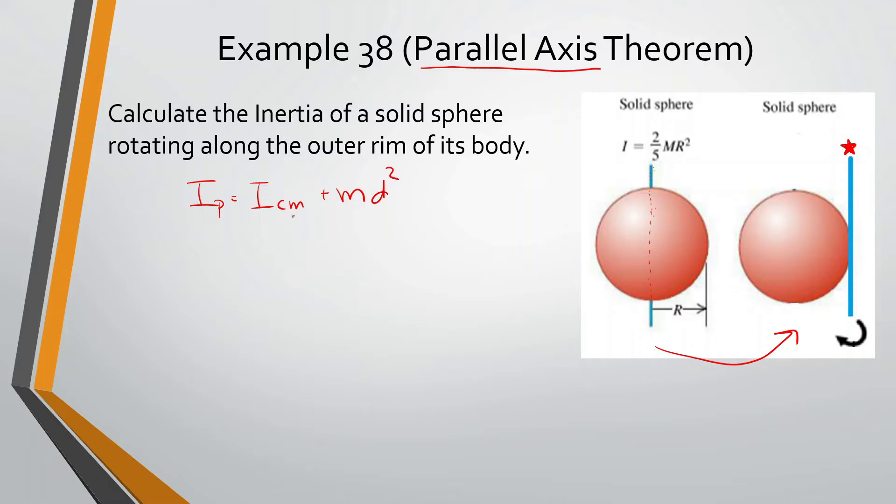Okay, so this is at the center of mass, m is just the mass of the object, and d is how far the object is from the center of mass. All right, so let's figure this out.